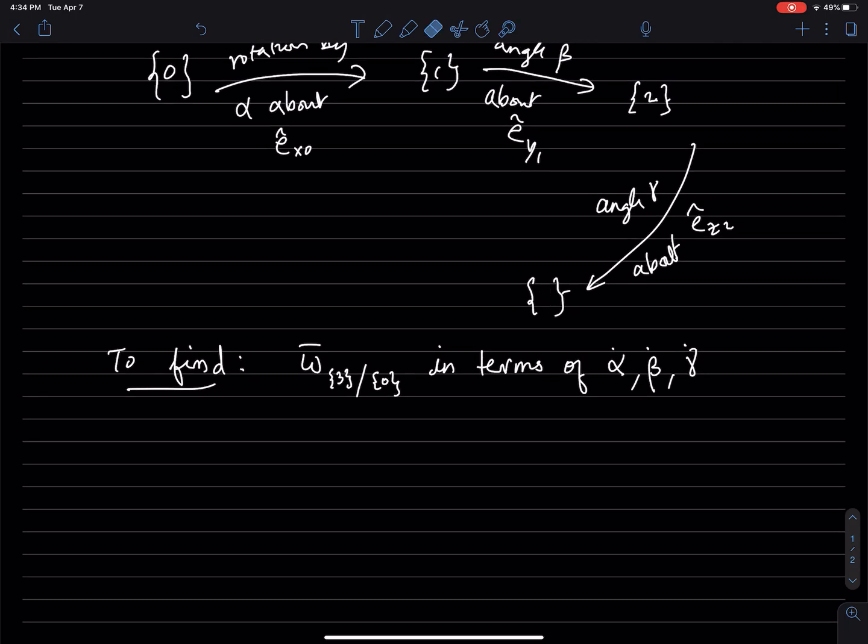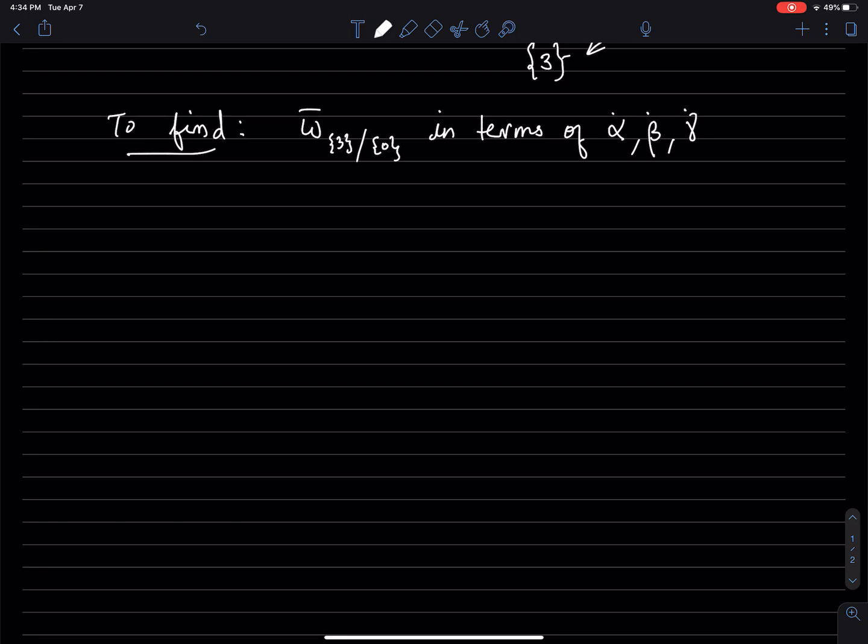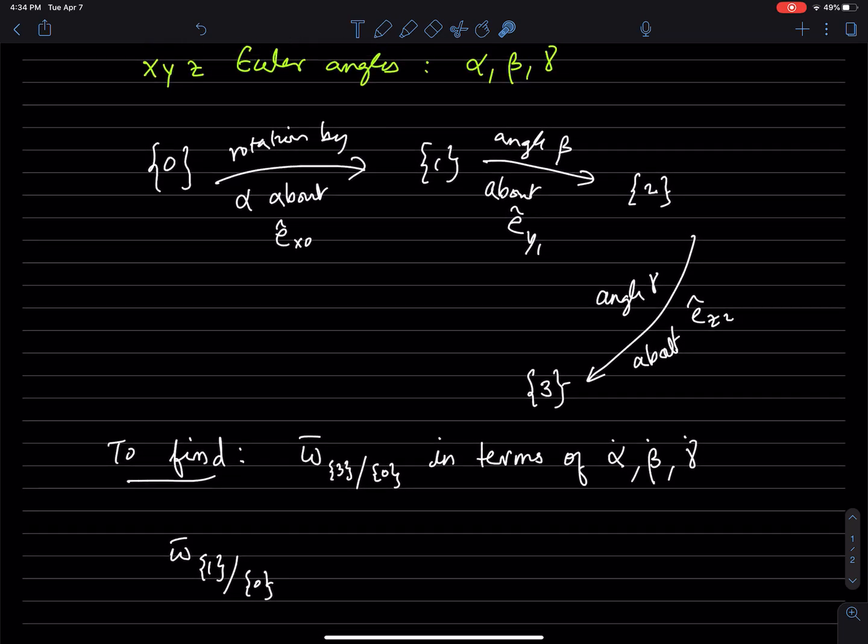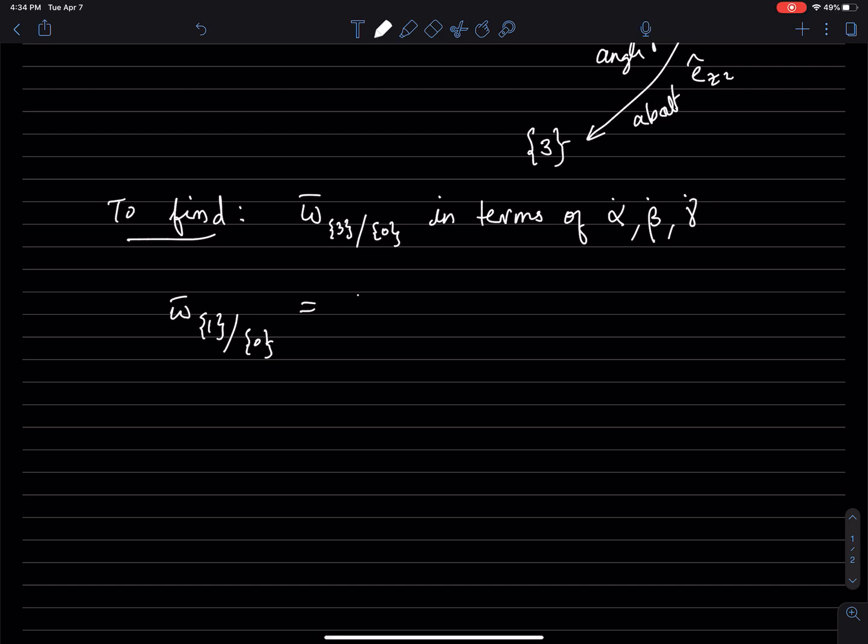So first, let's sort of go from 3 to 2, 2 to 1, 1 to 0. It doesn't matter which order you go in. So omega, well, let's go in the forward order. So omega 1 with respect to 0, what is that quantity? Well, frame 1 rotates about frame 0, has a rotation of alpha about frame 0, specifically about e_x0. So this is the axis of rotation, this is the angle. So angular velocity itself is just going to be equal to alpha dot e_x0. So that's the angular velocity of frame 1 with respect to frame 0.